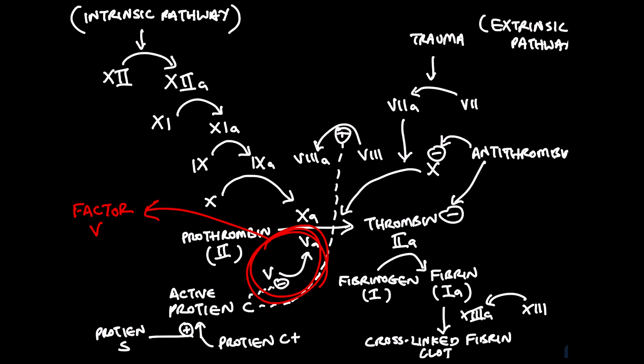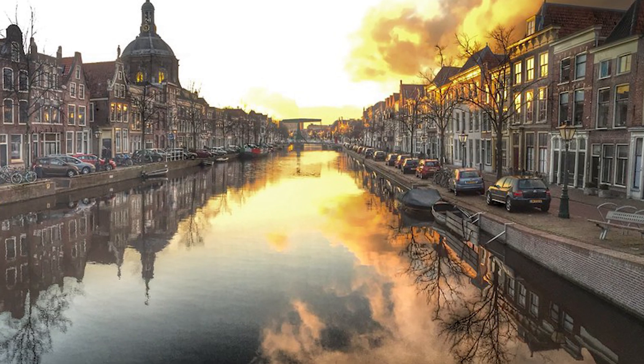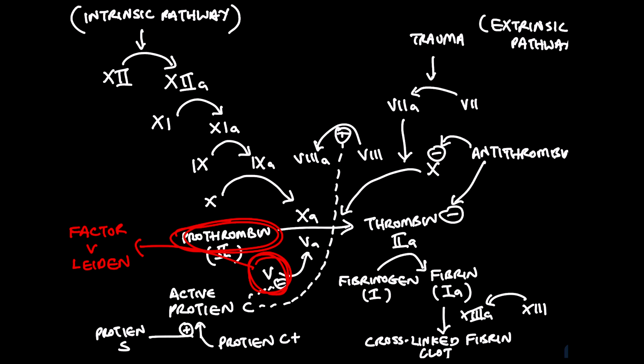One of the most common reasons that clots form when they shouldn't is genetics. Patients who have a genetic predisposition to forming clots have issues with some part of this complex cascade, causing it to trigger inappropriately when blood is still inside the body and bleeding isn't occurring at all. The most common genetic mutation affects factor V. A mutation to the gene that codes for factor V results in a slightly altered protein called factor V Leiden, named after the city of Leiden in the Netherlands where the mutation was first uncovered in the 1990s. The second most common mutation affects the prothrombin factor. Together, factor V Leiden and prothrombin mutations account for about half of all known genetic mutations that lead to increased risk of clots.